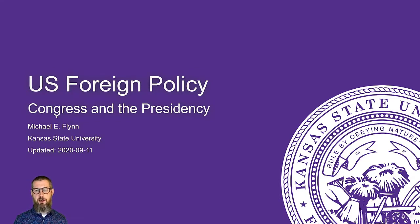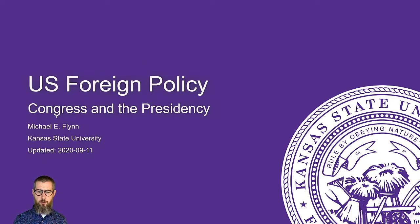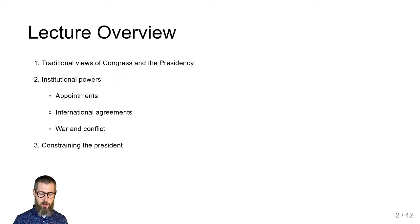After another three or four weeks on institutions, we're going to start getting into specific topical areas of U.S. foreign policy making — like the use of military force, trade, and things of that sort. For today, we're going to start by thinking about Congress and the presidency.